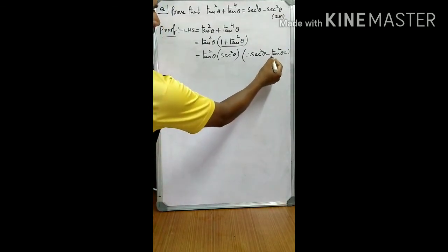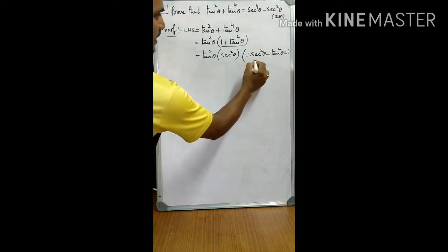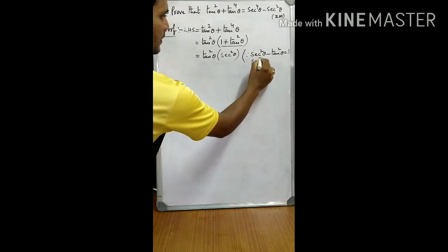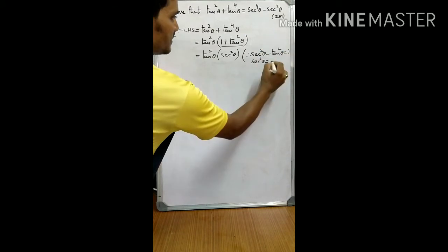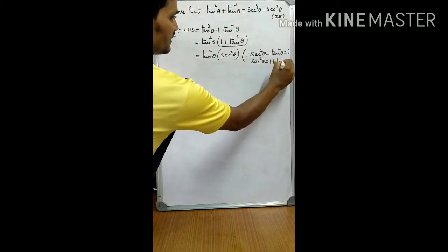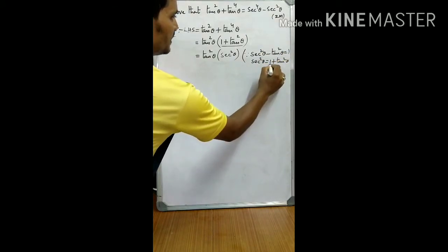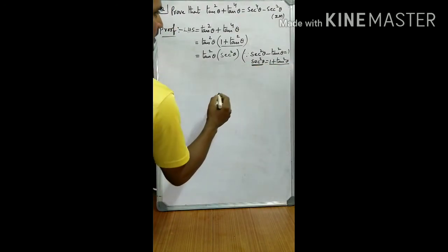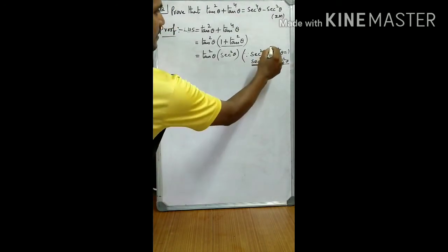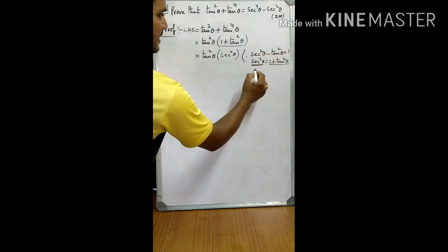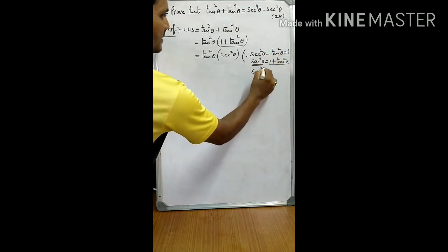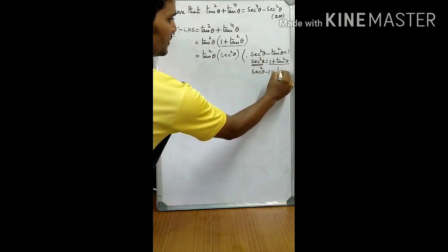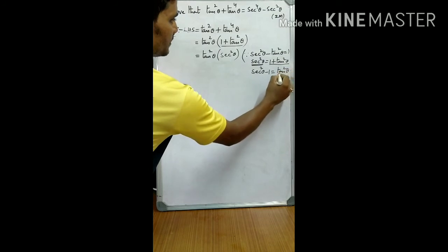From this identity we can write two forms. One form: secant squared theta is equal to 1 plus tan squared theta. The other form: bring tan squared theta to the RHS and 1 to the LHS, giving secant squared theta minus 1 is equal to tan squared theta. We are using both of these.